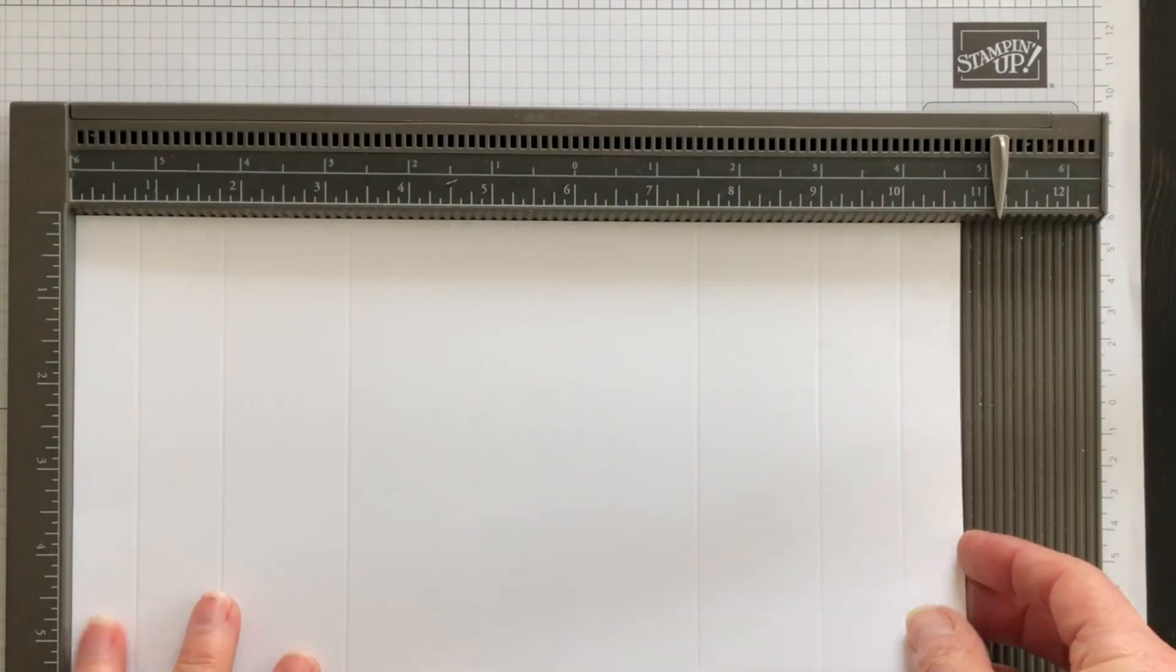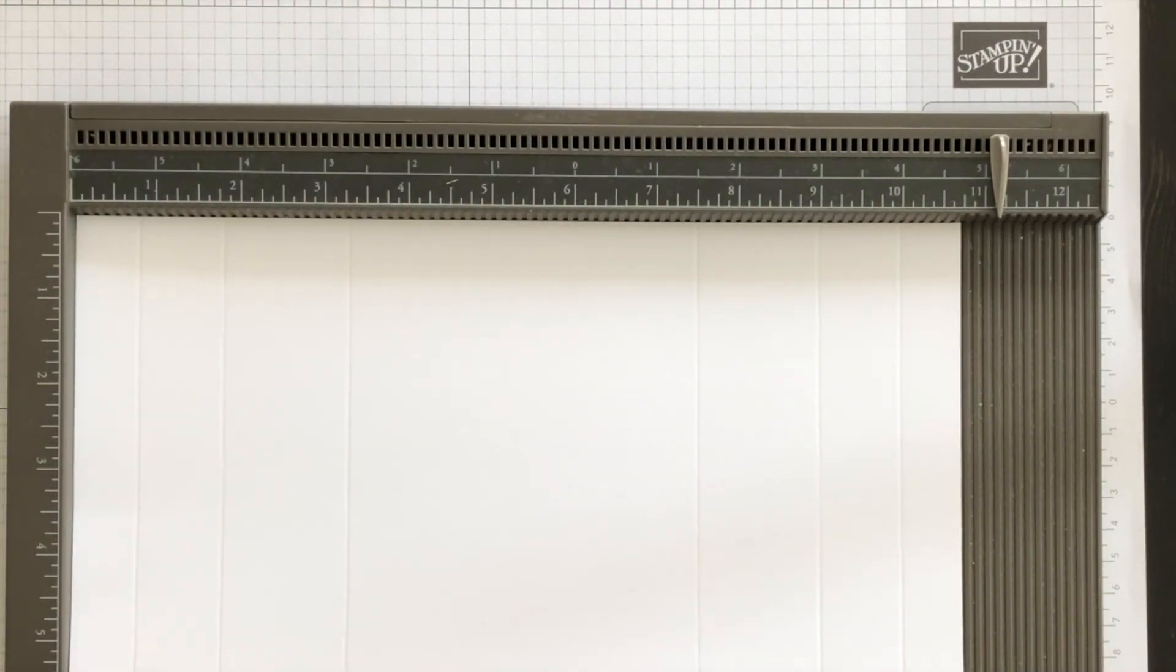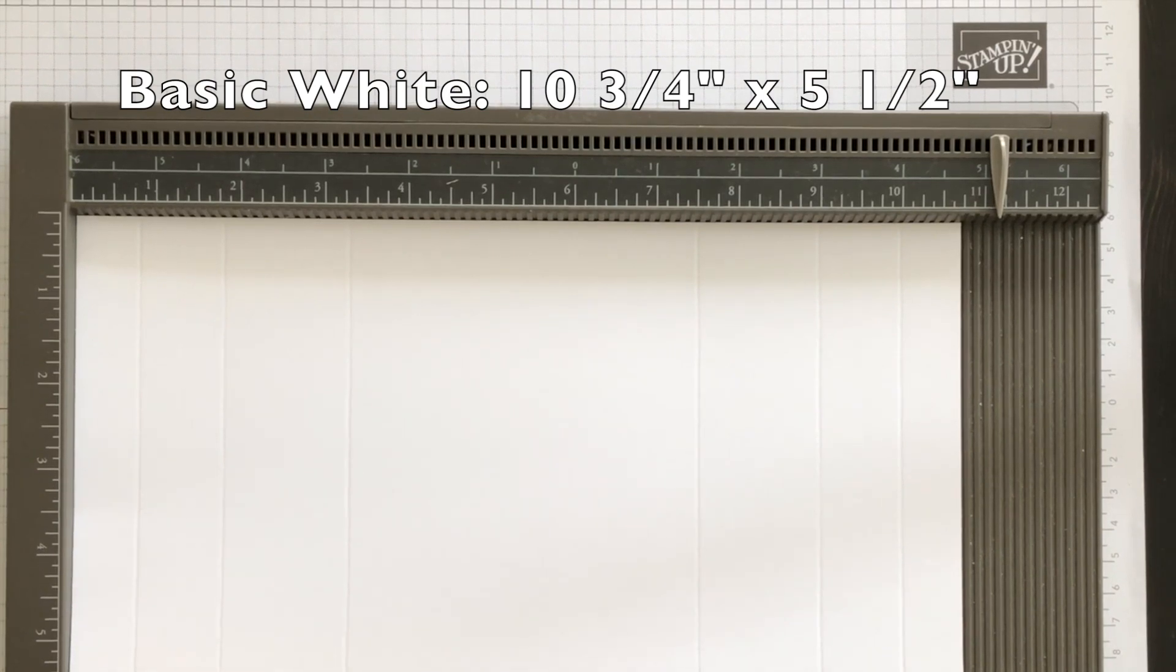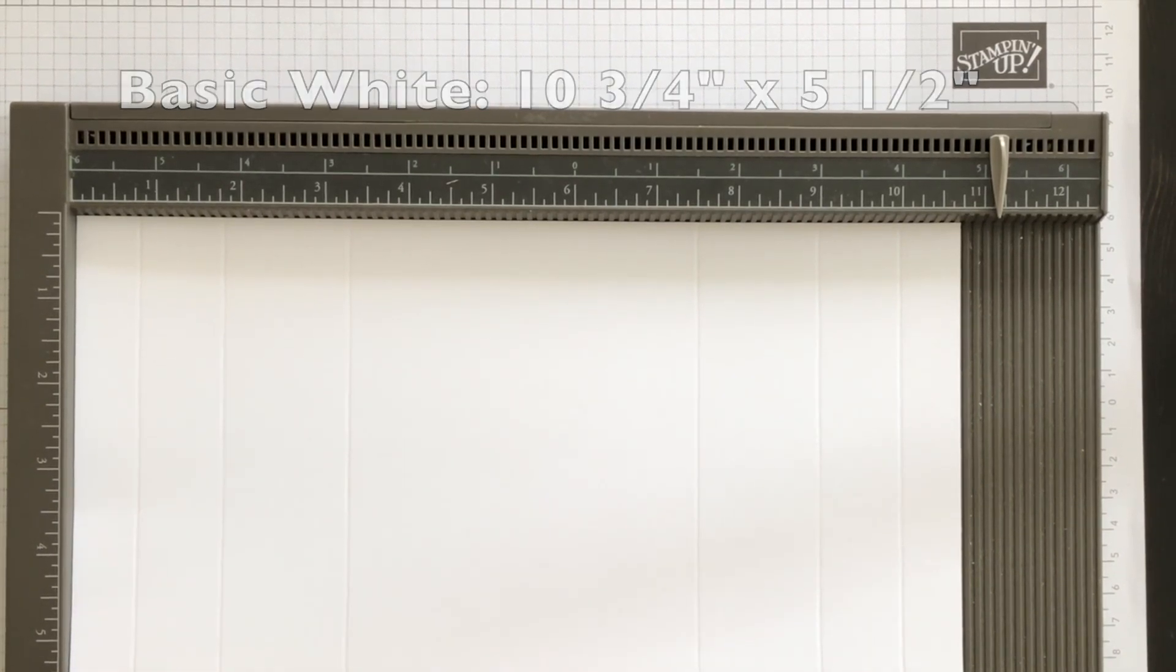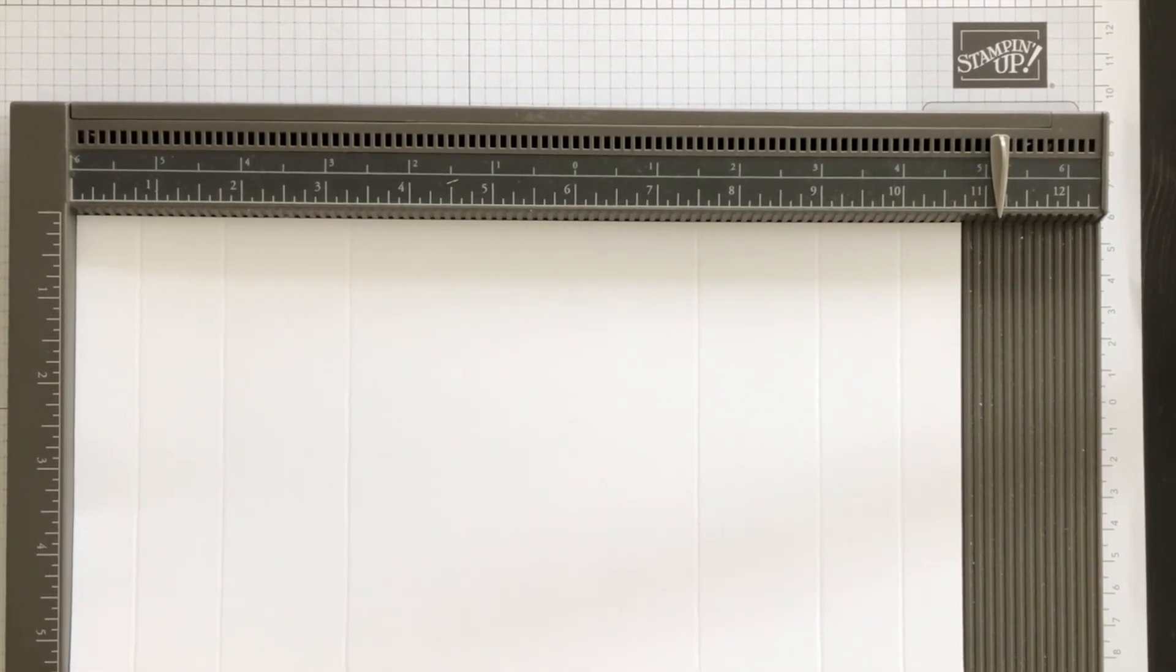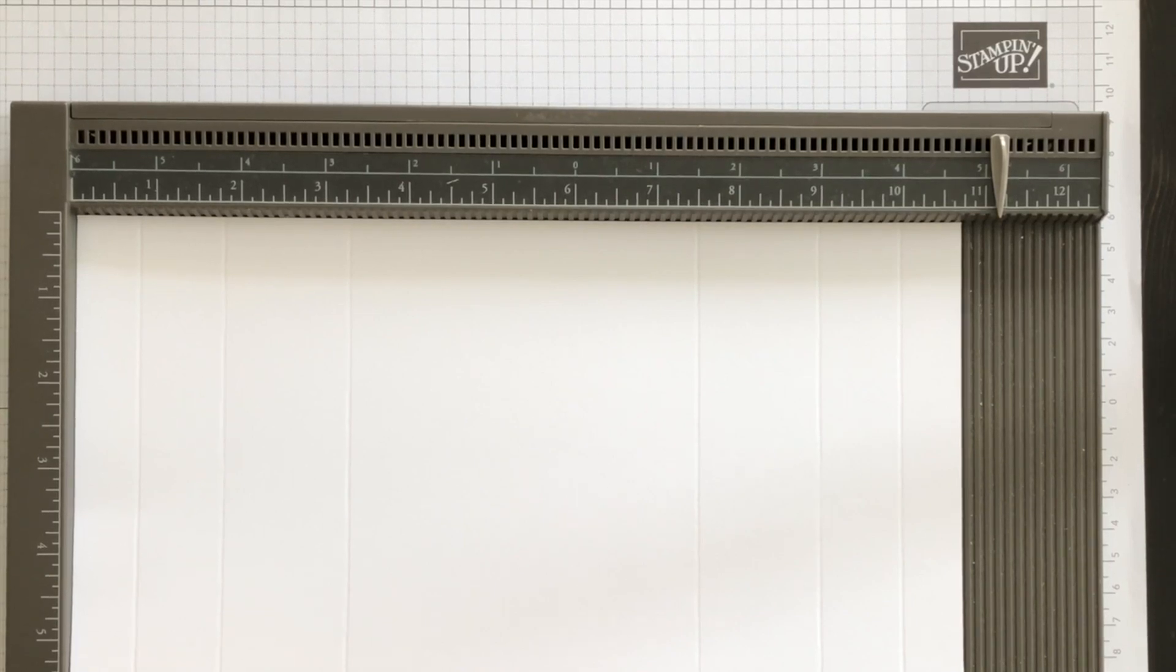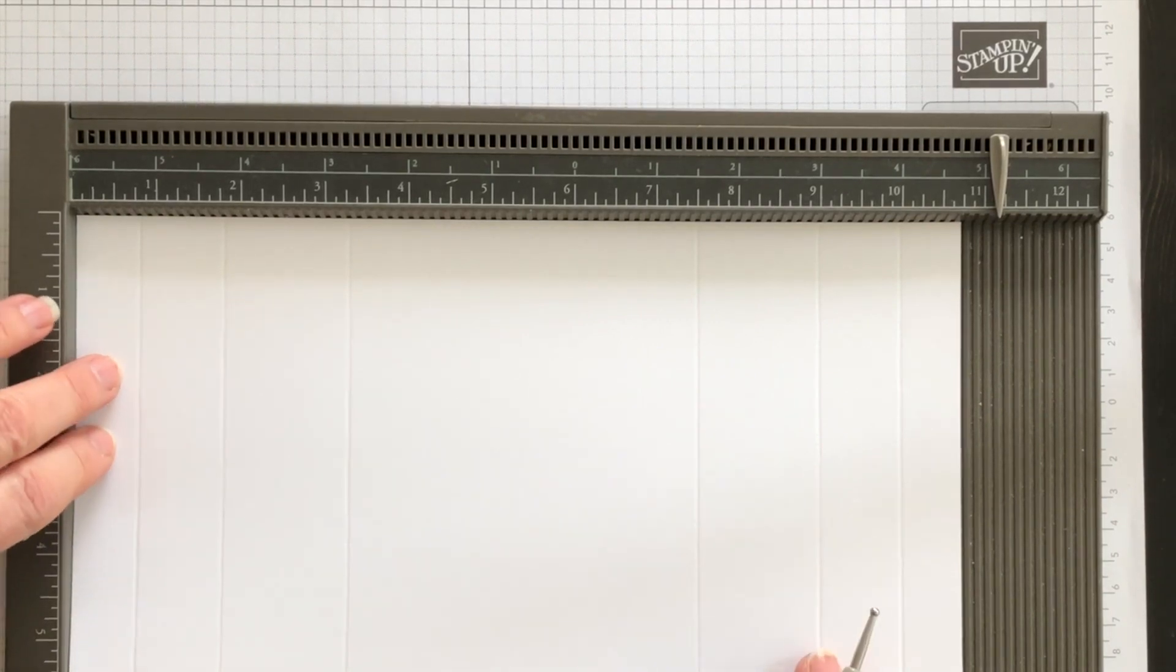My card base, which is actually going to be the fun fold itself, is basic white. And you're going to need some kind of a scoring implement. The Simply Scored is perfect for this kind of project, because there are several score lines that you're going to have to create. So let me talk you through them.